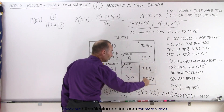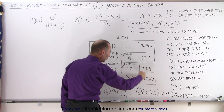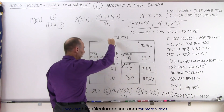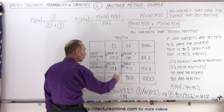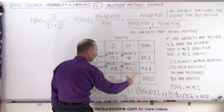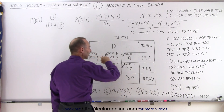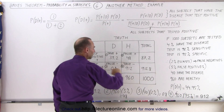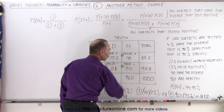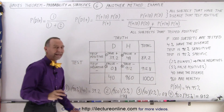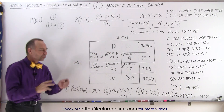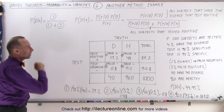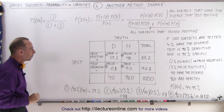You can see that all the values add up correctly: the total adds up to 1000, disease column adds to 40, healthy column adds to 960, positives add to 87.2, and negatives add to 912.8. That's how we use the table format to calculate the various probabilities.